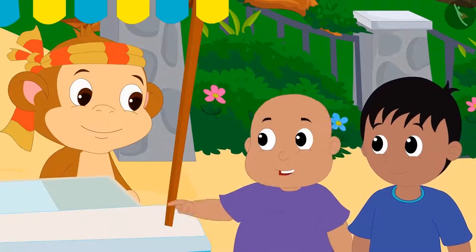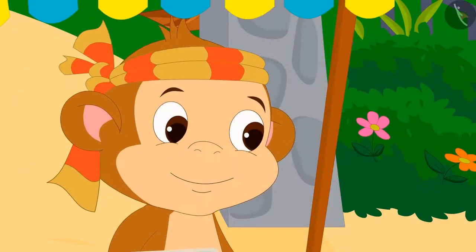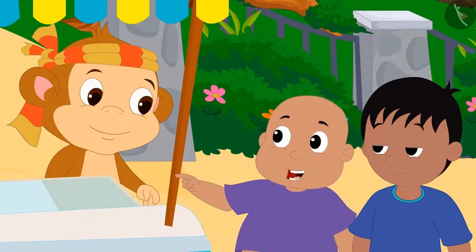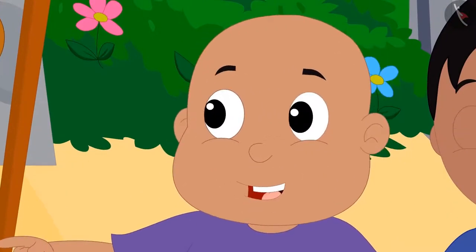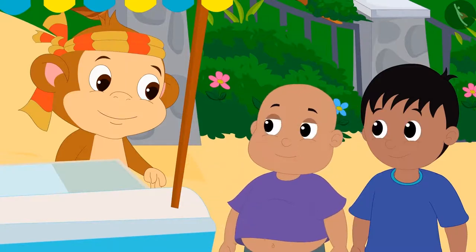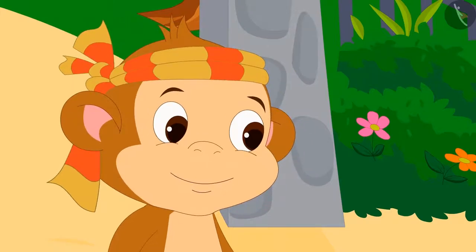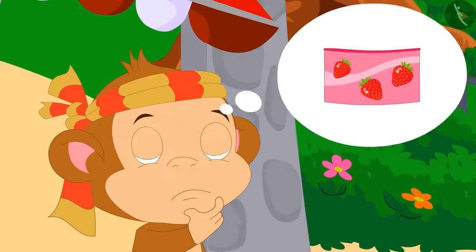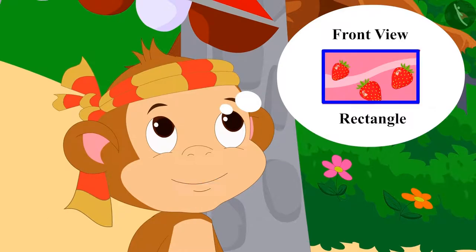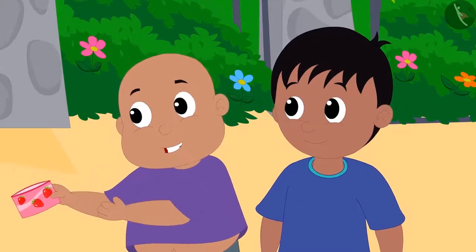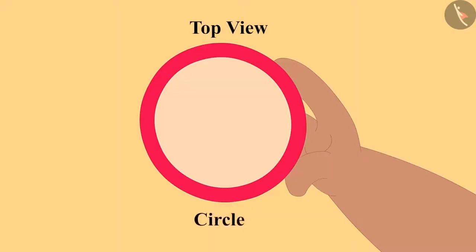Babban, you are the smartest in the village. I will ask you some questions and if you give me the correct answers, then I will pay for the ice cream. If you give the wrong answer, you will have to give me the ice creams for free. Okay. Bablu took an ice cream cup from Babban and asked, what is the shape of this ice cream cup? Babban looked at the cup from the front and immediately replied, rectangle. Bablu showed him the cup from above — that is top view — and said, wrong answer. This is a circle.